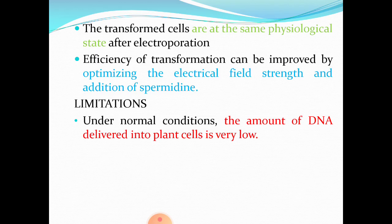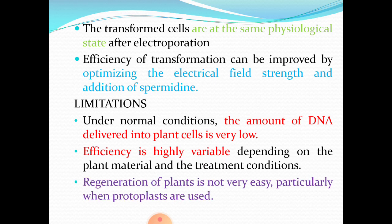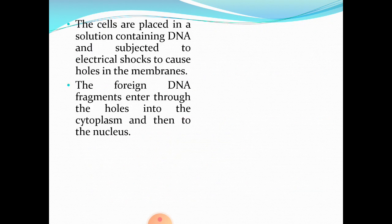At the same time, electroporation has its own limitations. Under normal conditions, the amount of DNA delivered into plant cells is very low — transfection efficiency is low. Efficiency varies depending upon the plant material used and the treatment conditions; if protocols are not properly standardized, efficiency will come down. Regeneration of plants is also not very easy, especially when the target cell is a protoplast.